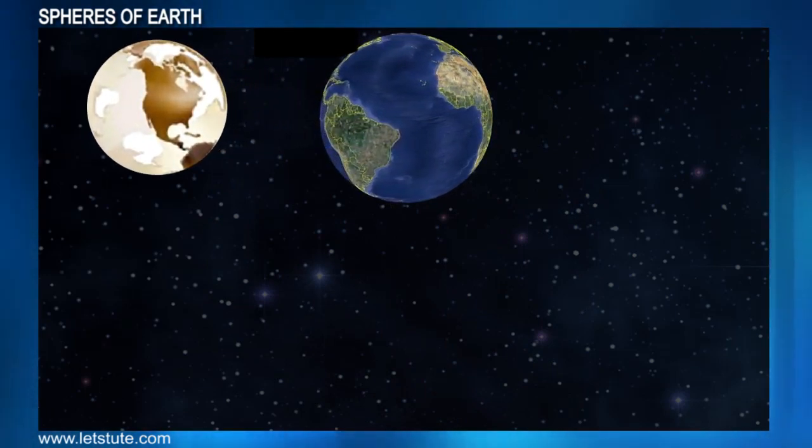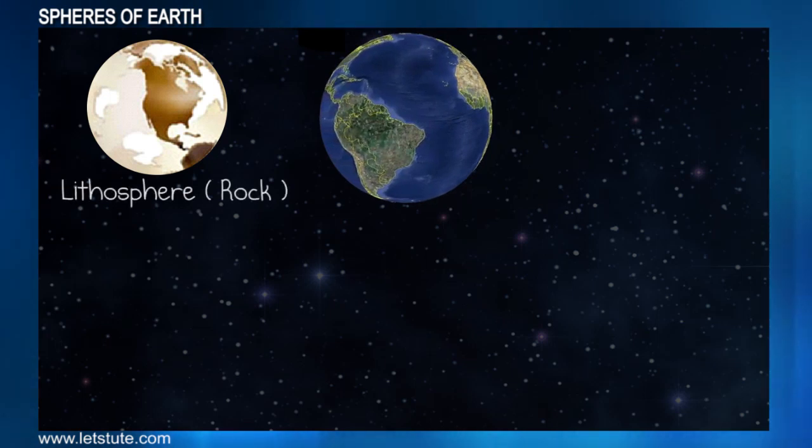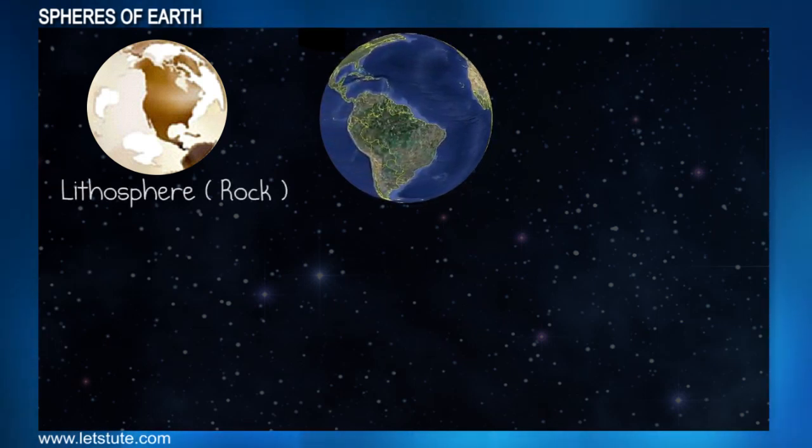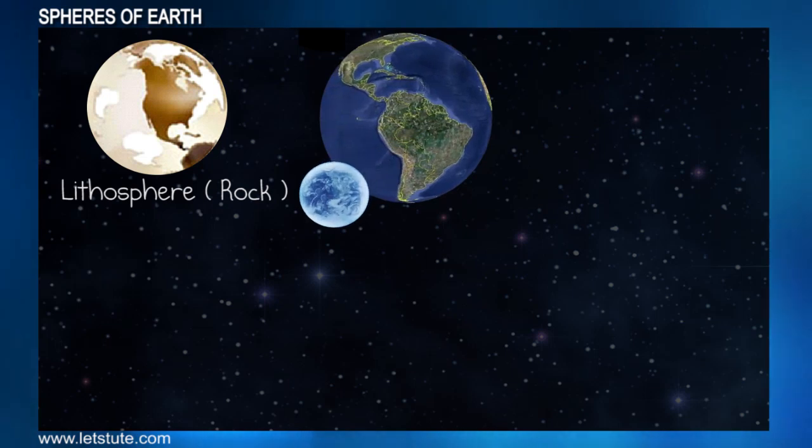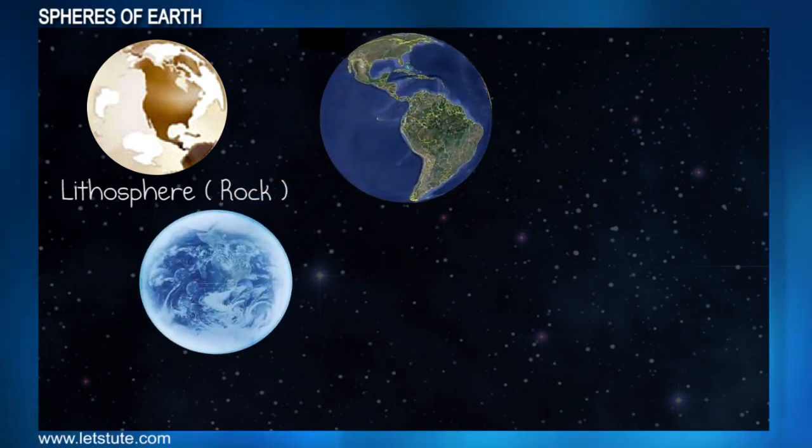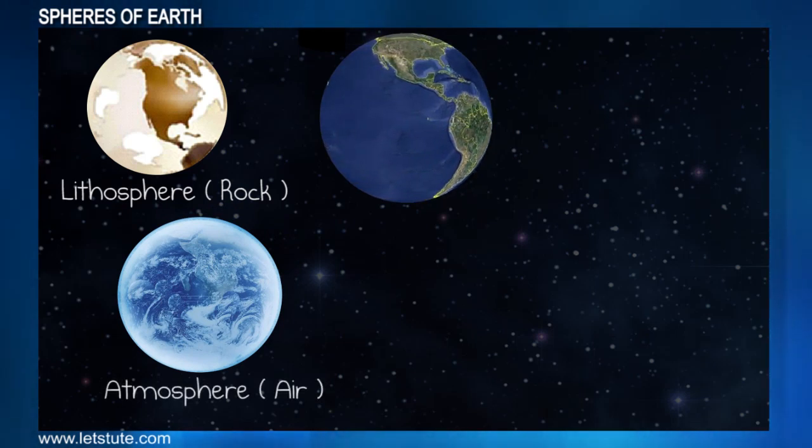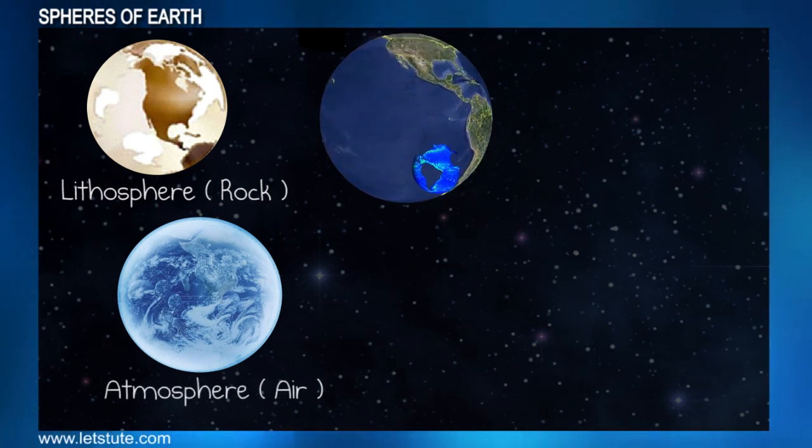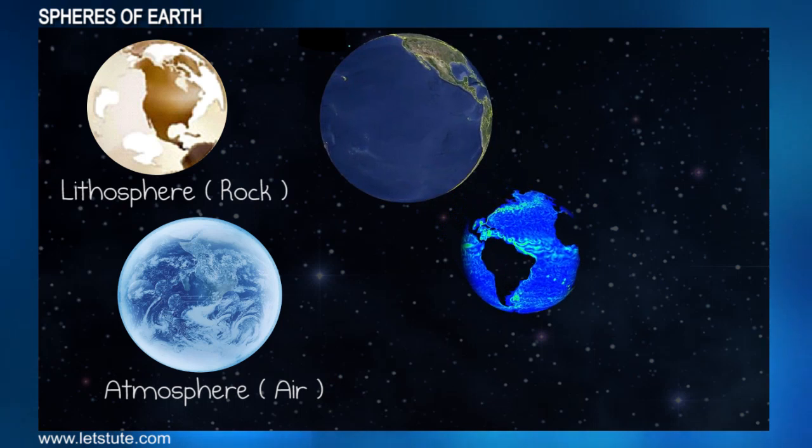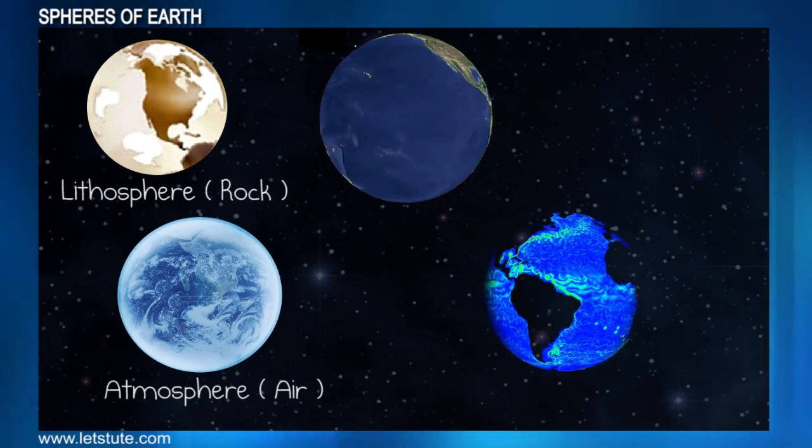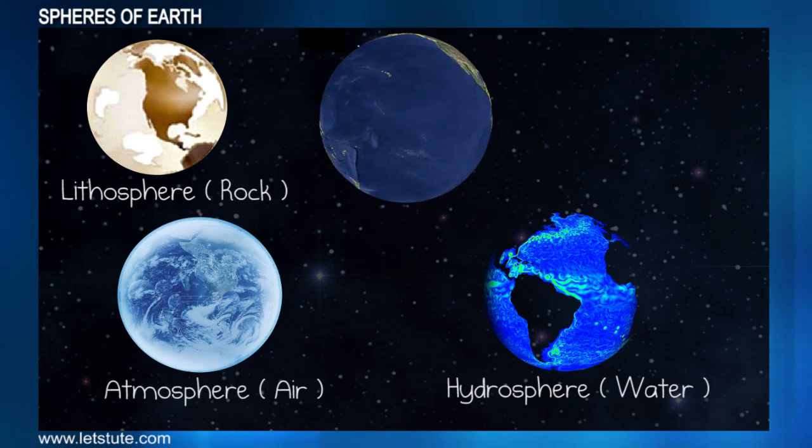...we get a separate sphere called the lithosphere. Similarly, the air surrounding our Earth's surface can be taken as one sphere called the atmosphere. The bluish part on a globe which indicates the water surface would form another sphere called the hydrosphere.